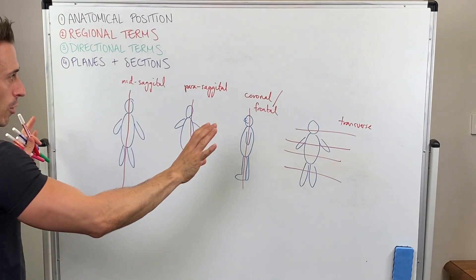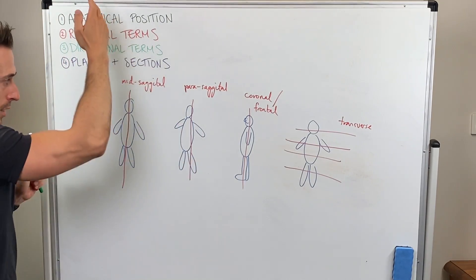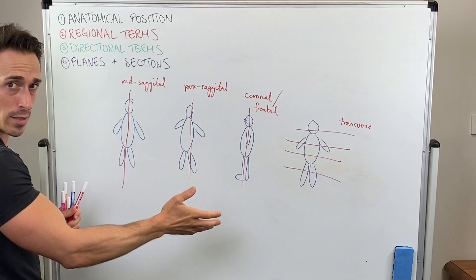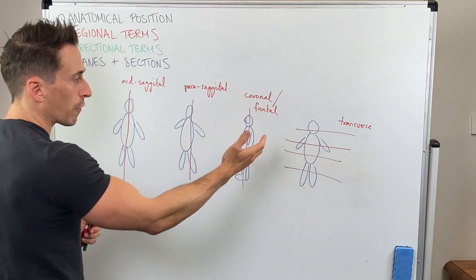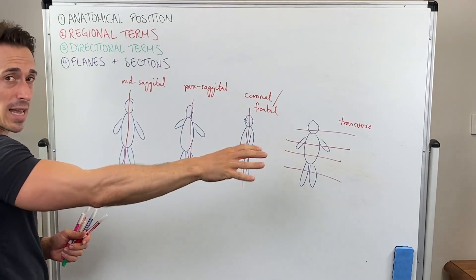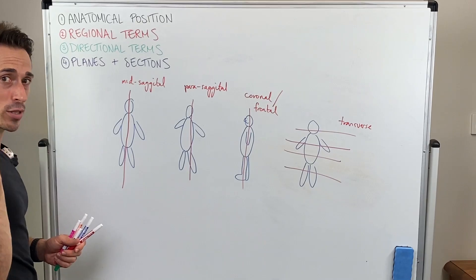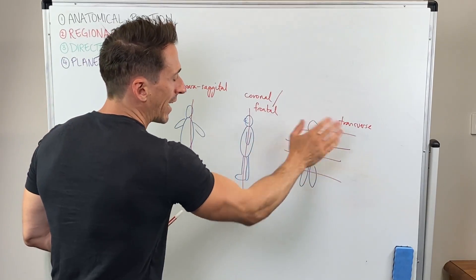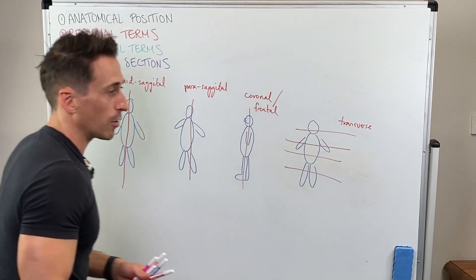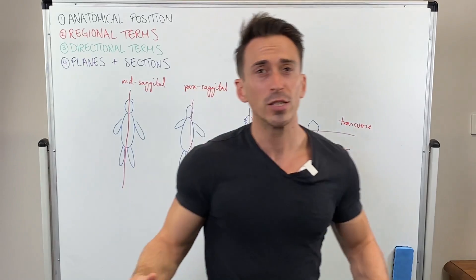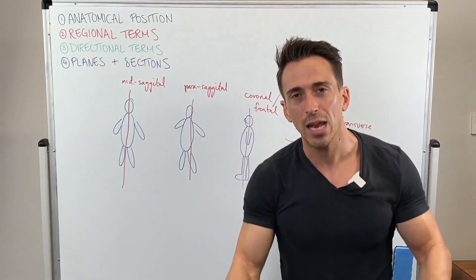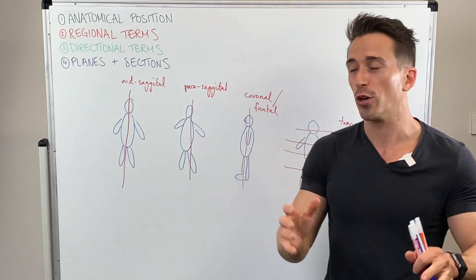To summarize the planes: mid-sagittal gives equal left and right sections; parasagittal gives unequal left and right sections; coronal or frontal gives anterior and posterior sections; and transverse gives superior and inferior sections. So that's a quick run through of really important anatomy and physiology based terms.